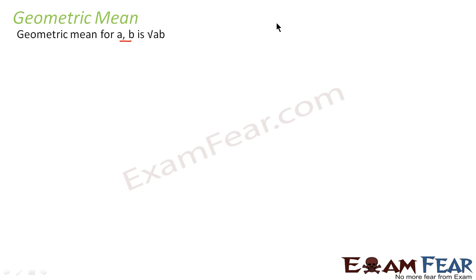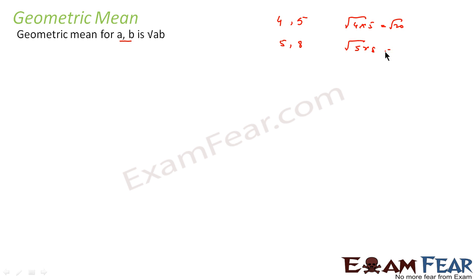Geometric mean for two terms a and b is nothing but root of ab. For example, if we have 4 and 5, the geometric mean is root of 4 into 5, that is root of 20. Similarly, if we are supposed to find the geometric mean of 5 and 8, that is root of 5 into 8, that is root of 40. Now suppose we find the geometric mean of 2 and 8 — that will be root of 2 into 8, that is root of 16, which is 4.